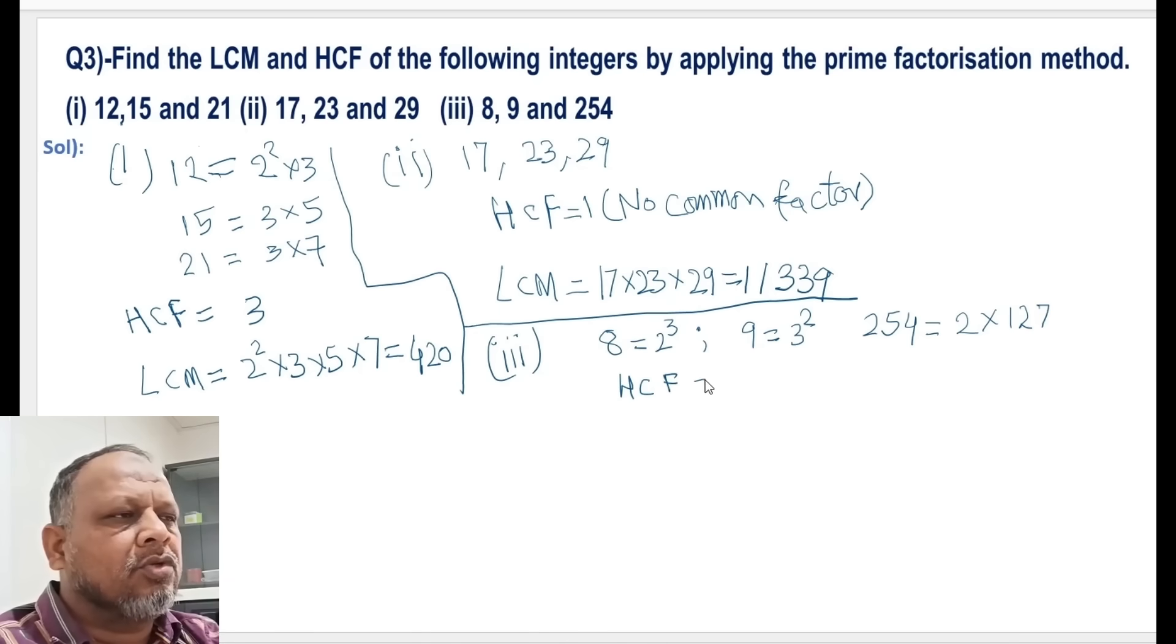And LCM will be equals to 2 cube into 3 square into 127, and this equals 9,144. So we have completed all the bits in this question.